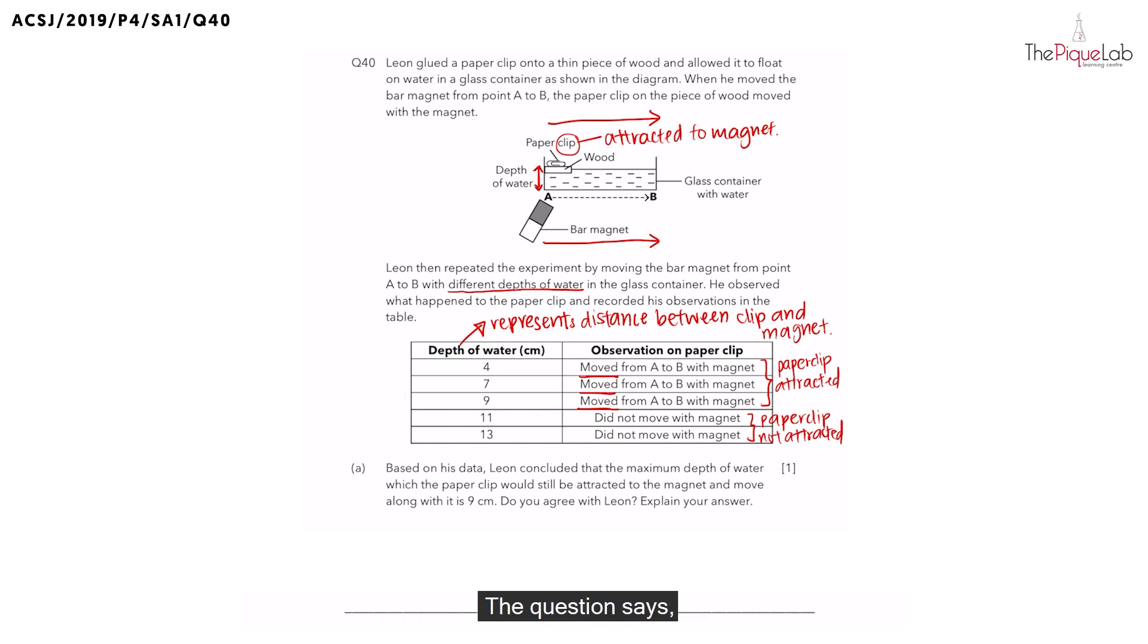Okay, so now let's take a look at the question. The question says, based on his data, Leon concluded that the maximum depth that the paperclip can still be attracted must be only 9 cm. Now, do you agree with Leon? So for students, they would think, based on this data, I can see that the last number before the paperclip was no longer attracted was 9 cm. So Leon must be correct. However, we did not measure the results between 9 to 11 cm. So between 9 to 11 cm, there is a possibility that the paperclip may still be attracted.